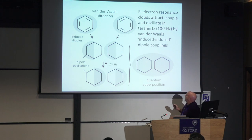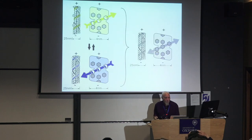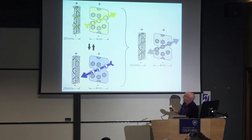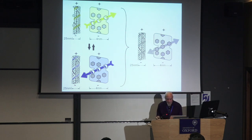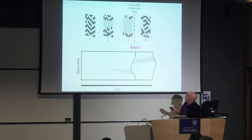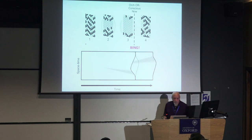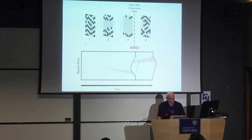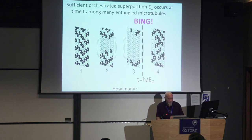Molecules that are psychoactive — including dopamine and serotonin, and the psychedelics LSD, DMT, and psilocybin — all have these pi resonance groups. If you take two pi resonance groups nearby each other, they will attract and then oscillate in terahertz, and they can also go into quantum superposition. The basic idea is that superposition in E-sub-G would evolve over time and reach a threshold for objective reduction — ORC-OR conscious now — at time T, based on E-sub-G equals H-bar over T.